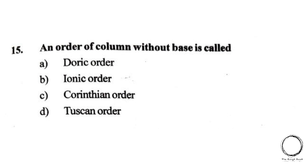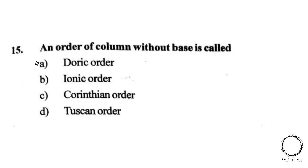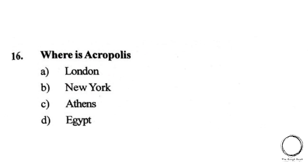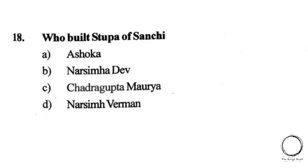Moving on: an order of column without a base is called: A) Doric order, B) Ionic order, C) Corinthian order, D) Tuscan order. The right answer is A, Doric order. Moving on: where is the Acropolis? Options: A) London, B) New York, C) Athens, D) Egypt. The right answer is C, Athens.